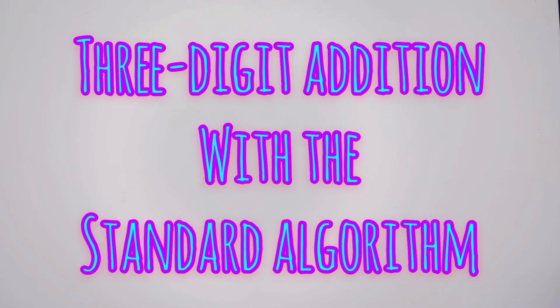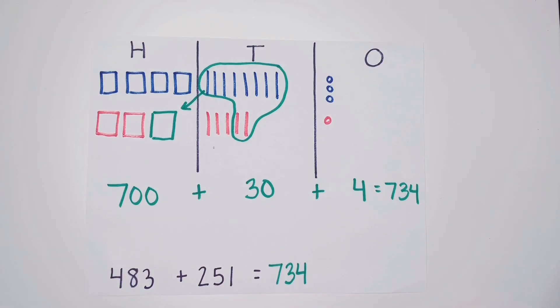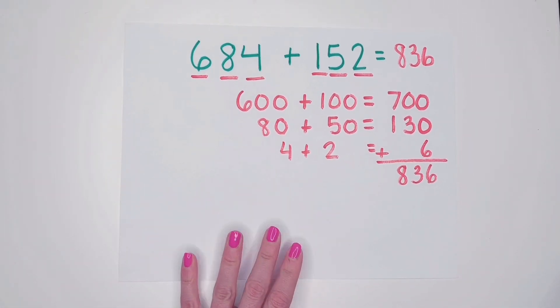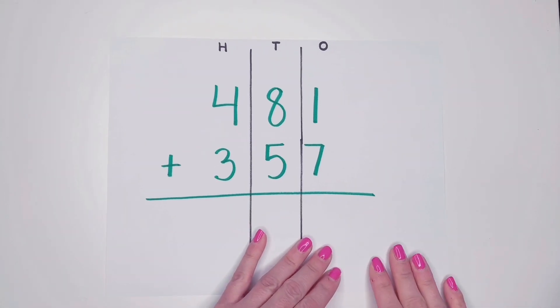So we have learned using the HTO chart to help us with our addition. We have also learned how to use expanded form to help us with three-digit addition. And today we get to move on to the standard algorithm.